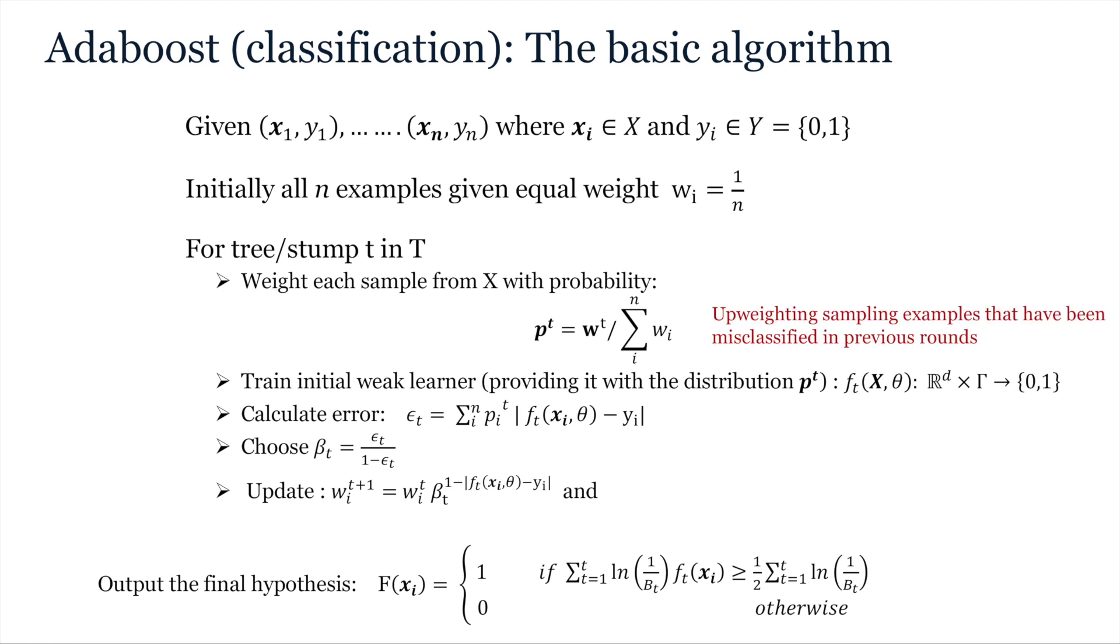Then, for each tree or stump, the algorithm first estimates p of t, which represents the normalized weights or probabilities for each example. These weights are passed to the weak learner for this iteration, telling it to minimize the cost relative to that probability distribution. So, in other words, it will learn a weighted cost paying more attention to getting higher weighted examples correct.